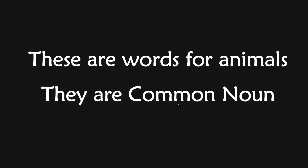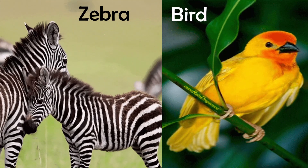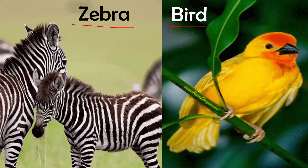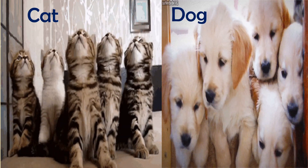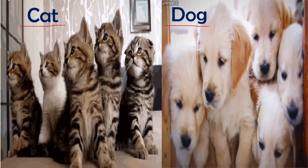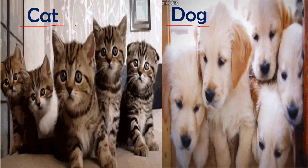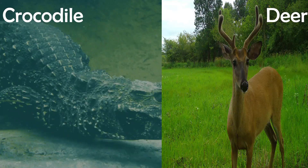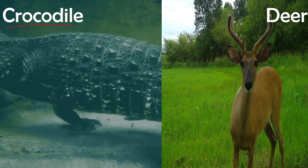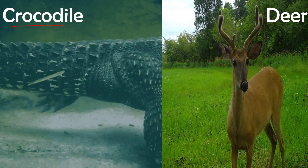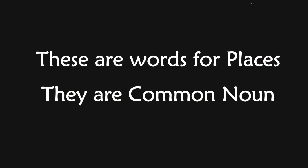There are some words for animals and we call these common nouns. That is zebra — zebra represents all the community of zebras. Bird represents all the community of birds, so it is a common noun. Cat represents a whole family; various kinds of cats come under the word cat. Dog is also a common noun — various kinds of dogs come under the word dog. Also cow, hen, crocodile, deer — these are all common nouns.